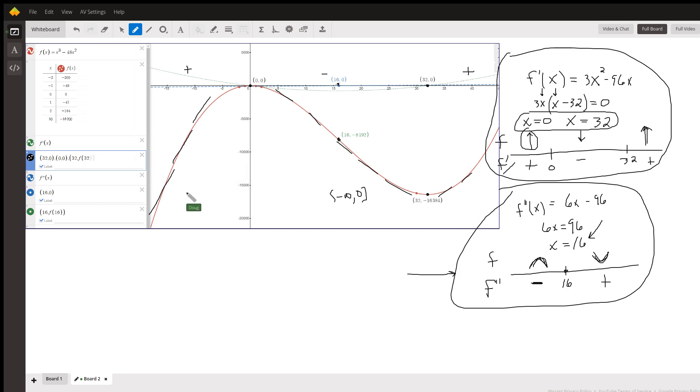And so we're concave down to the left of 16 and concave up to the right of 16. Notice that the tangent lines from negative infinity to 16 are decreasing in slope. Second derivative.